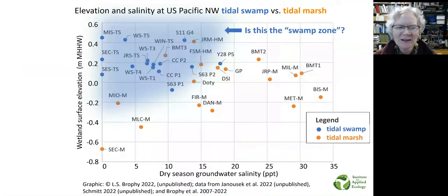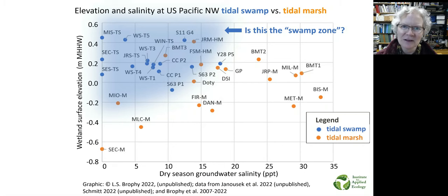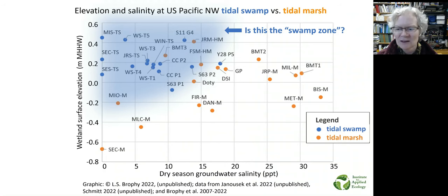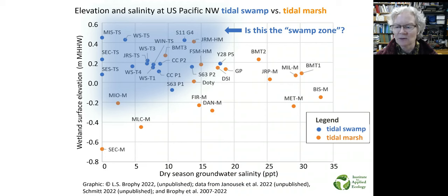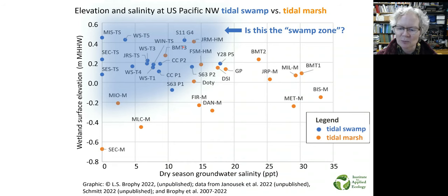In real life, things are not all that simple. This graph represents a huge amount of work by our teams and colleagues collecting elevation and long-term salinity data for over 40 sites throughout the Pacific Northwest. Each dot represents a sampled tidal wetland — either a forested tidal swamp (the blue dots) or an emergent tidal marsh (the orange dots). On the y-axis is the elevation in meters relative to mean higher high water, shown as zero. On the x-axis is the dry season groundwater salinity in parts per thousand. Forested tidal wetlands tend to cluster in the upper left — the higher and fresher areas — but there is considerable overlap in the elevation and salinity tolerances of marsh and swamp.